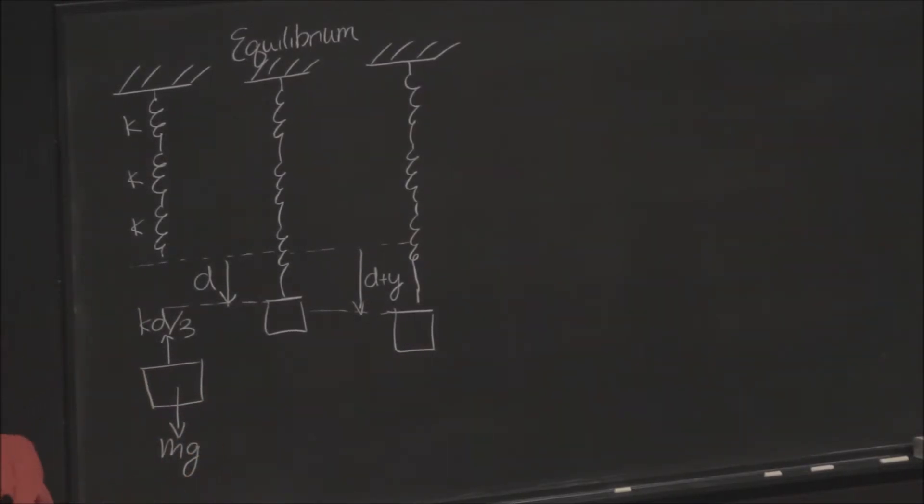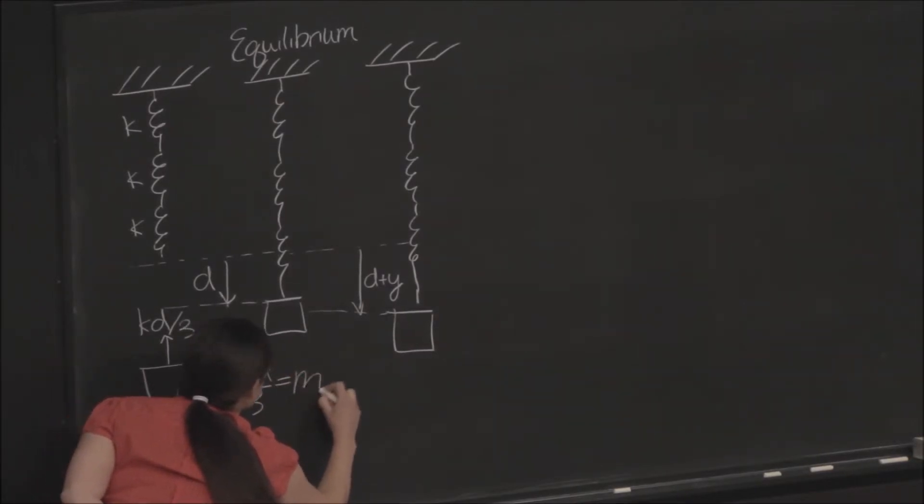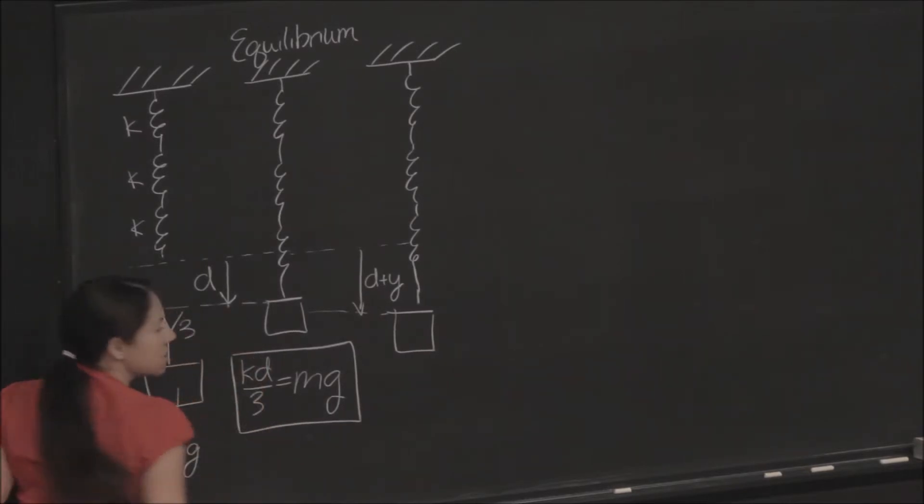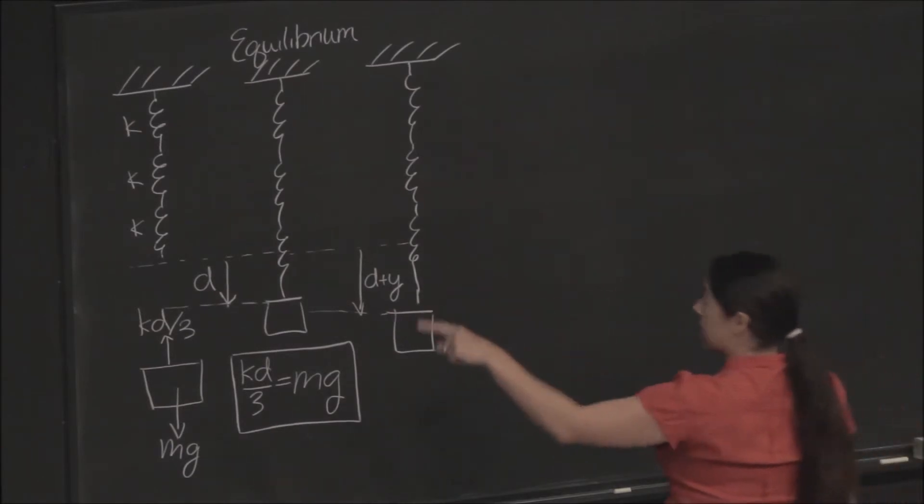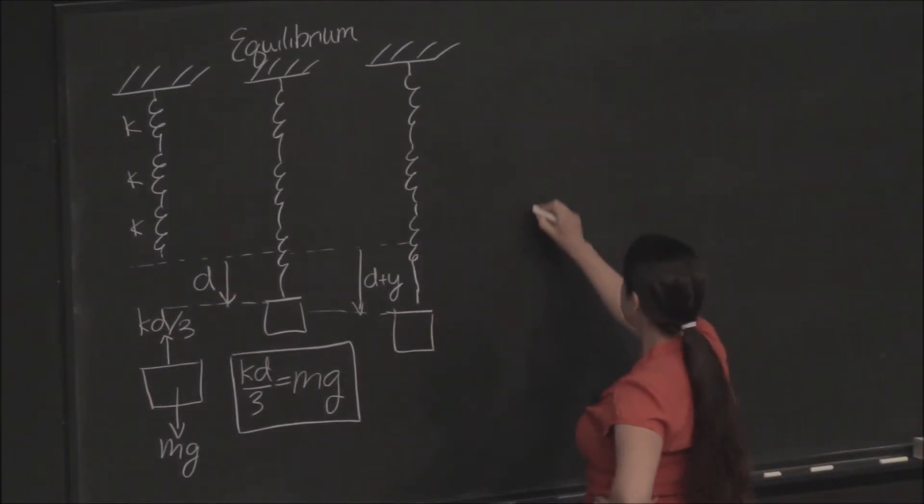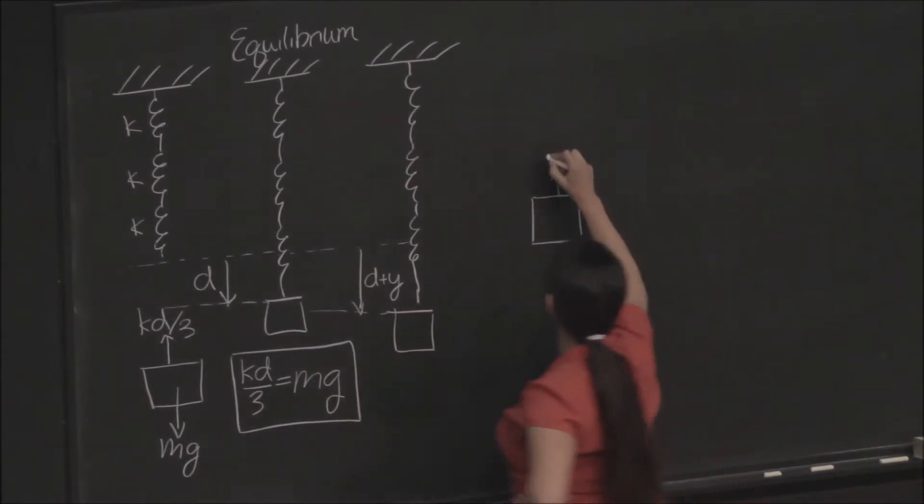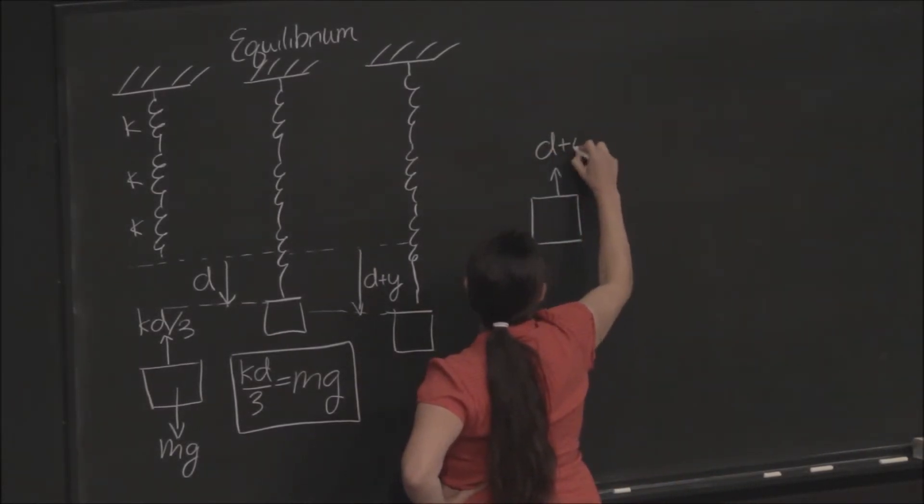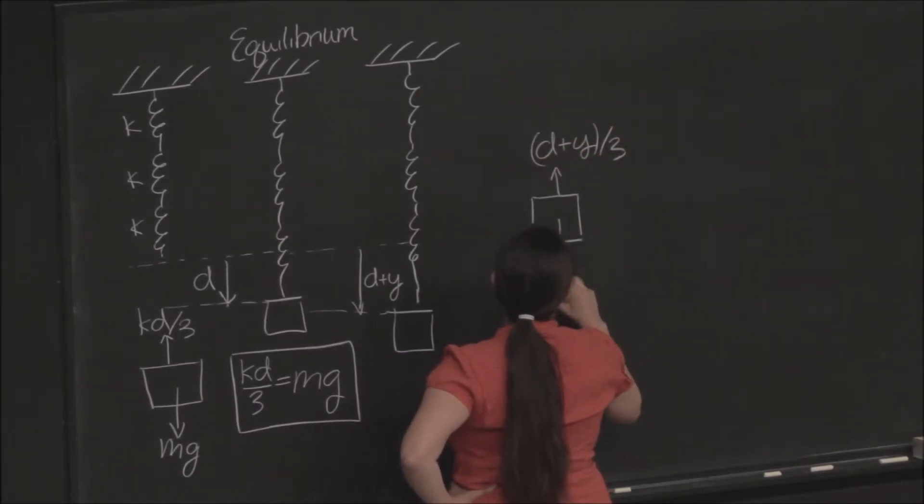And we still have gravity pulling down on it. So, in equilibrium, these forces have to balance each other out. So we end up with KD over 3 equals MG. OK, you can see where this factor of 3 is going to come in. We're going to do the exact same thing here as we did on this guy. OK, so for now, when we stretched it some amount,